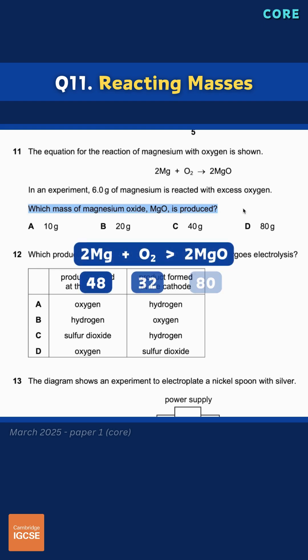From this, we can work out that 48 units of magnesium react with 32 units of oxygen to form 80 units of magnesium oxide.